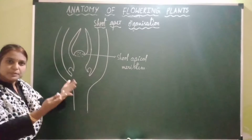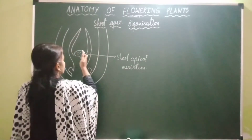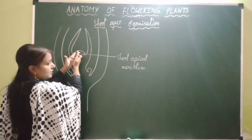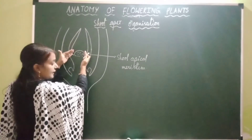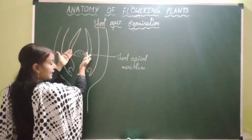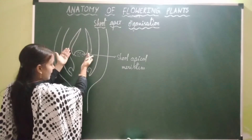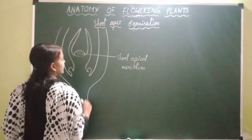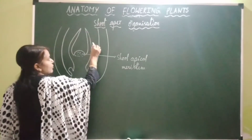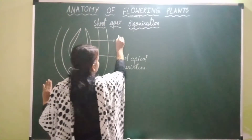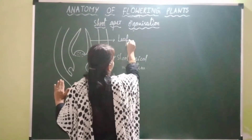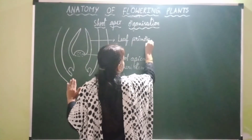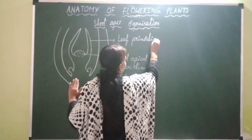Leaf primordia develop into leaves. The cells present in the apical meristem cut off cells towards the lateral side, flanking the shoot apical meristem, which form leaf primordia that develop into leaves.